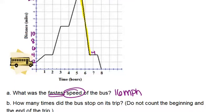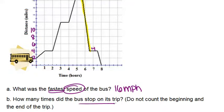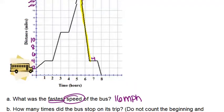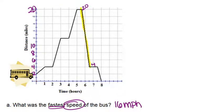Part B: How many times did the bus stop on its trip? Do not count the beginning and end. Okay, so anytime the bus stopped, it will be where we have a horizontal line, because the distance away from the bus depot isn't changing as time is going on.